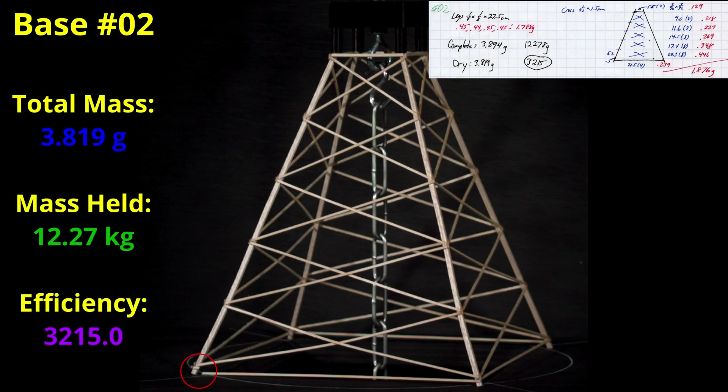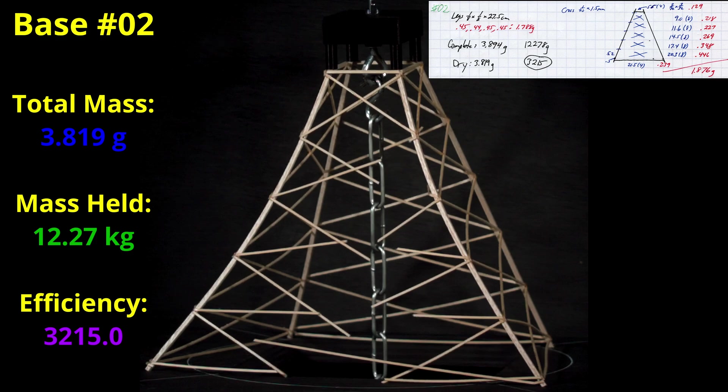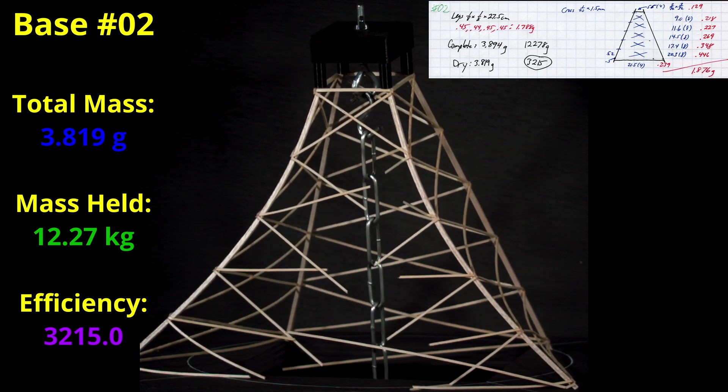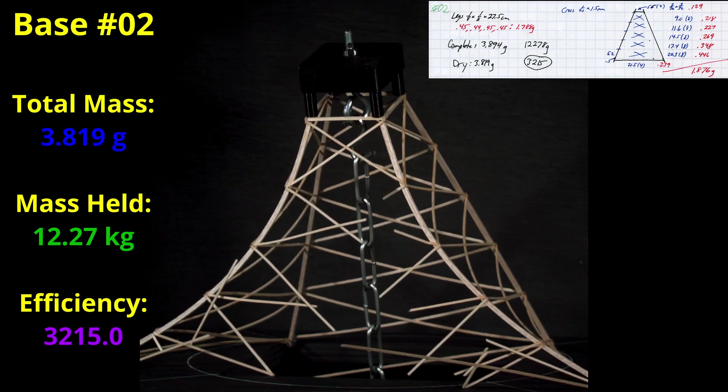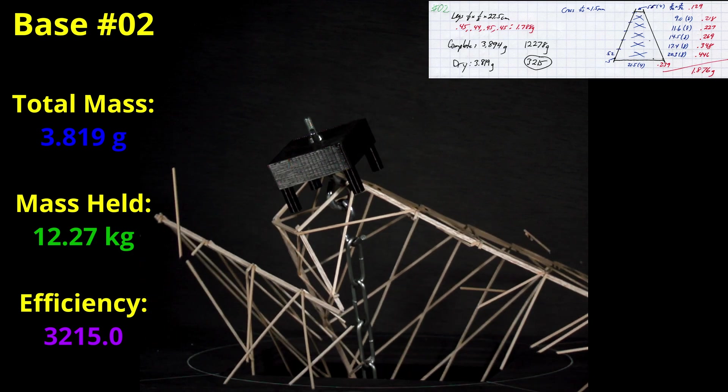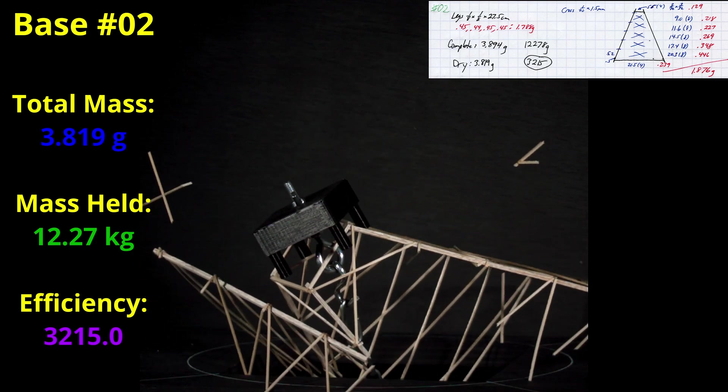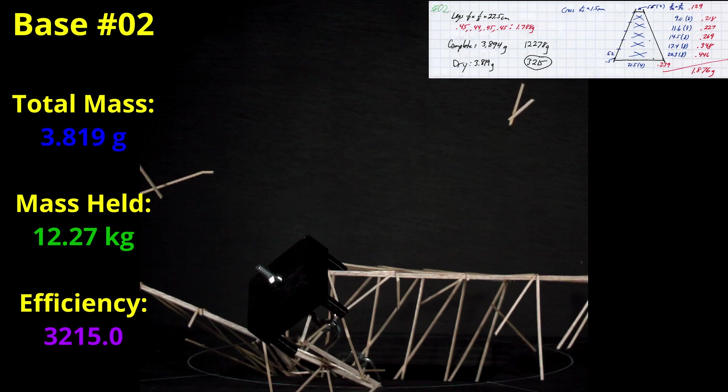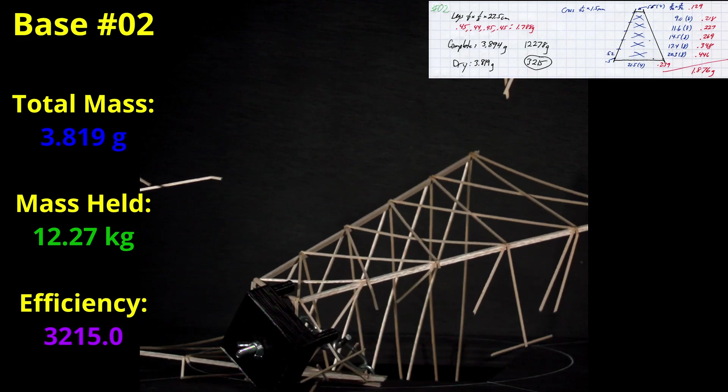Here is the high speed footage of the failure. You can see that the bottom left piece is broken from the start, just like in the live video. It is no surprise that the eventual failure is in the cross bracing close to that bottom piece. When a device splits like this, it is a good indication that your cross bracing is not strong enough.